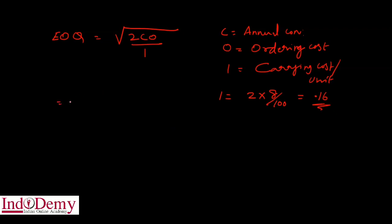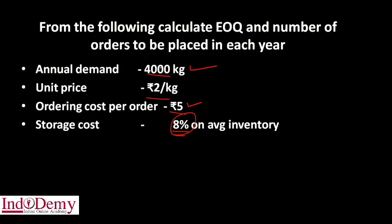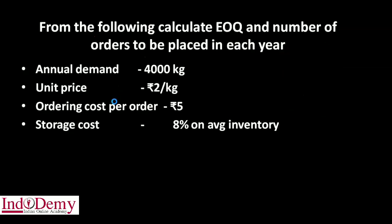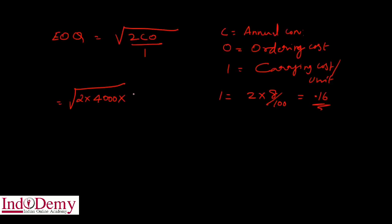Substituting into the equation: EOQ = square root of (2 × 4000 × 5) divided by 0.16.